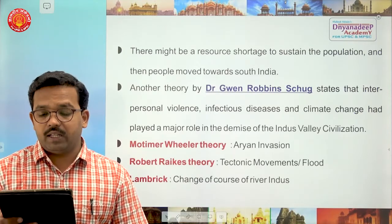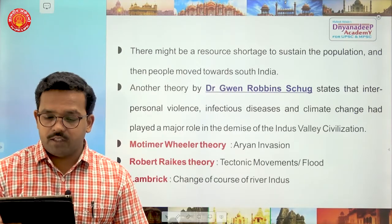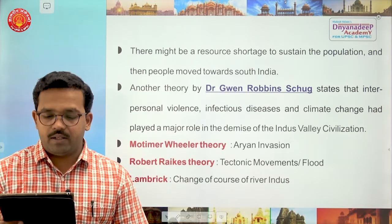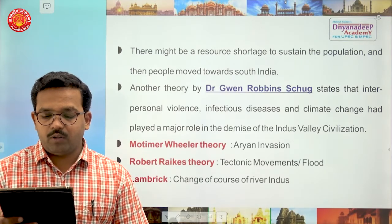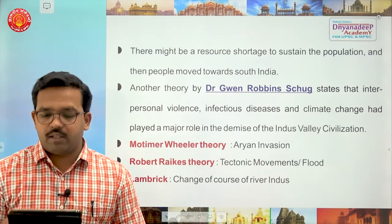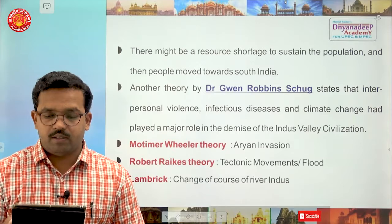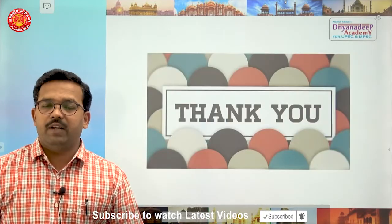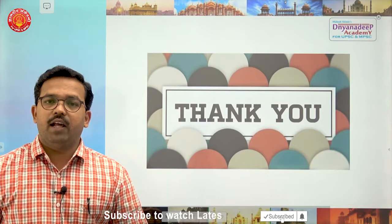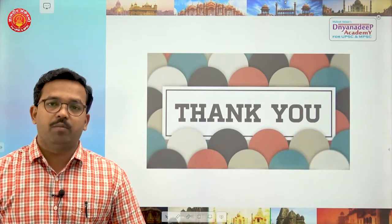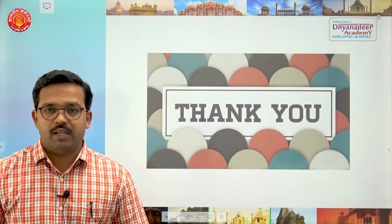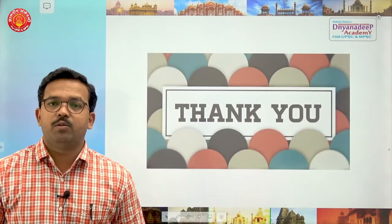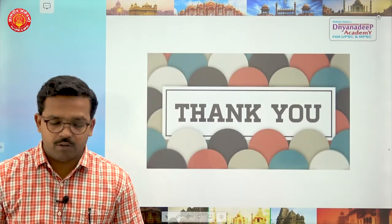Mortimer Wheeler's theory talked about Aryan invasion. Robert Raikes's theory talked about tectonic movement and floods. Lambrick's theory talked about changes in the course of the rivers of Indus. Thank you very much — we will be coming with all these kinds of daily Brain Teasers that will help you score maximum marks in UPSC Prelims 2021.